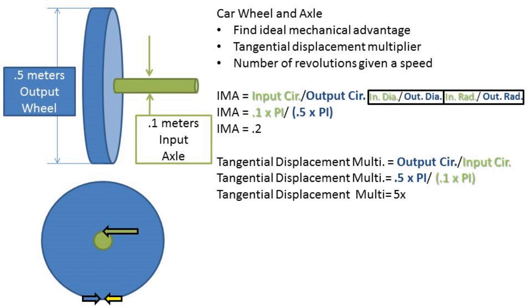Now let's calculate the tangential displacement multiplier. We can take the inverse of the mechanical advantage. So if we take the output circumference over the input circumference, we get the displacement multiplier of 5 times. This means that if we move a given distance at the outside edge of the axle, we will move 5 times that distance at the outside edge of the wheel.